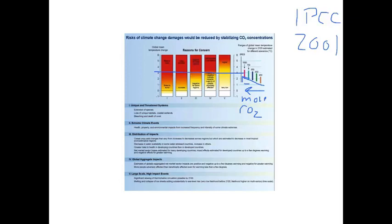Then what you see are various columns over here. So example one here is unique and threatened systems, such as species extinction. If you are a rare and endangered species living in a little national park and now you need to migrate and there's cornfields in the way, even a little bit of warming is pretty bad for you.